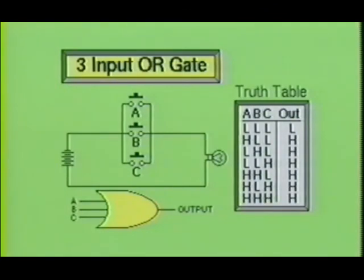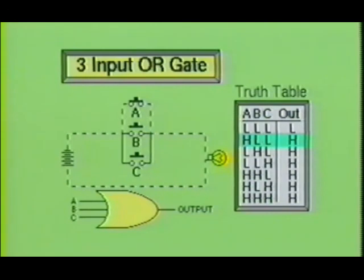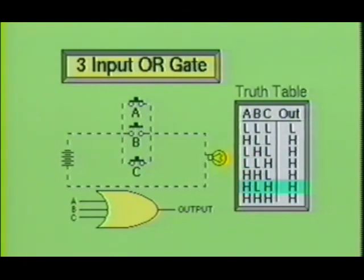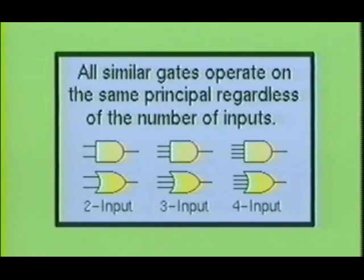Now let's examine a three-input OR gate using a simple parallel switch circuit consisting of three switches with a lamp as the load. The switches are wired in a normal open configuration. By examining the truth table, you can see that the lamp will be lit for every combination except one — only when none of the switches are energized will the lamp turn off. If switch A or switch B or switch C, or any combination of switches, is energized, the current path will be completed and the lamp will turn on. As seen from these illustrations, AND gates must have all inputs high to produce a high output, while OR gates need anywhere from one to all inputs high to produce a high output.